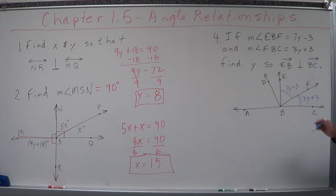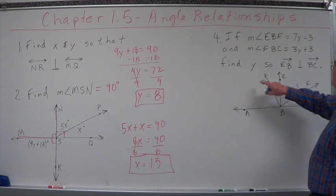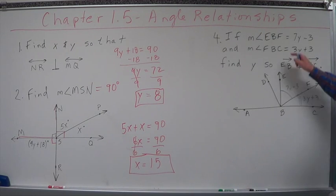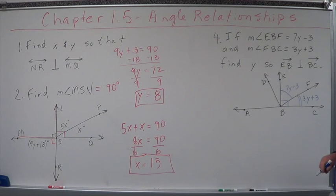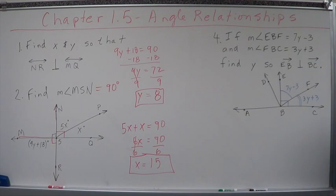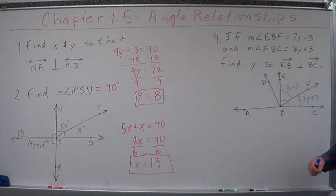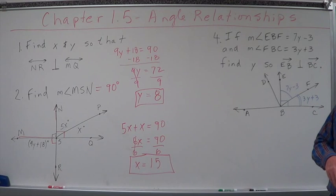I use two marks and one mark because they're not congruent. Find y so that ray EB is perpendicular to BC. So what has to happen to those two angles? Those two angles have to be complementary — two angles whose measures have a sum of 90 degrees.